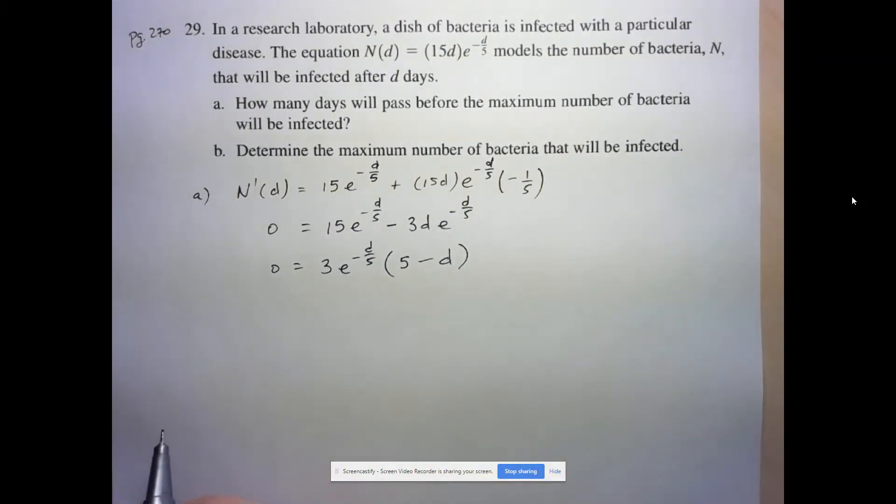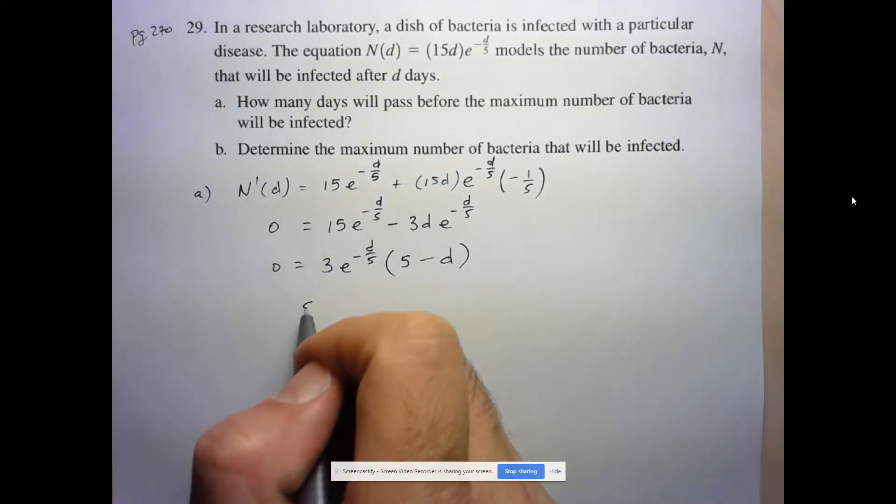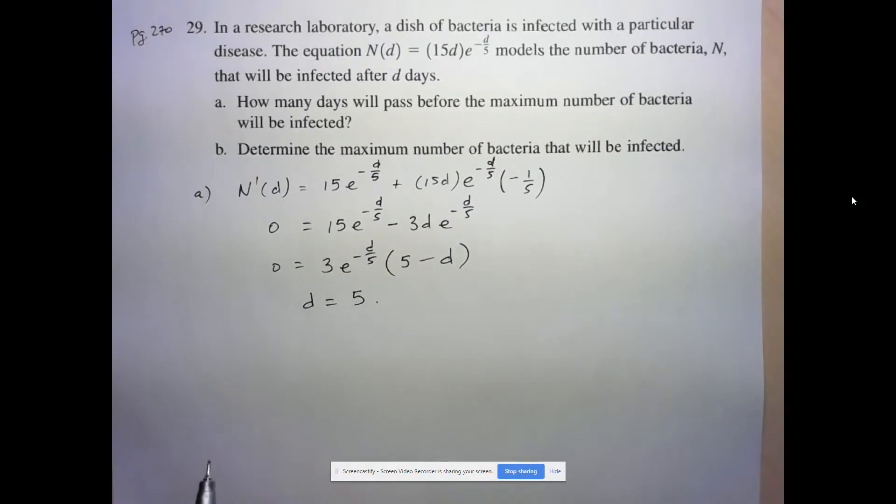So we have an expression in factored form equal to 0. So 3 can't be equal to 0. E to the negative D over 5 is never equal to 0. So the only thing that can make this expression 0 is the 5 minus D. So we have our only critical point is D equals 5.